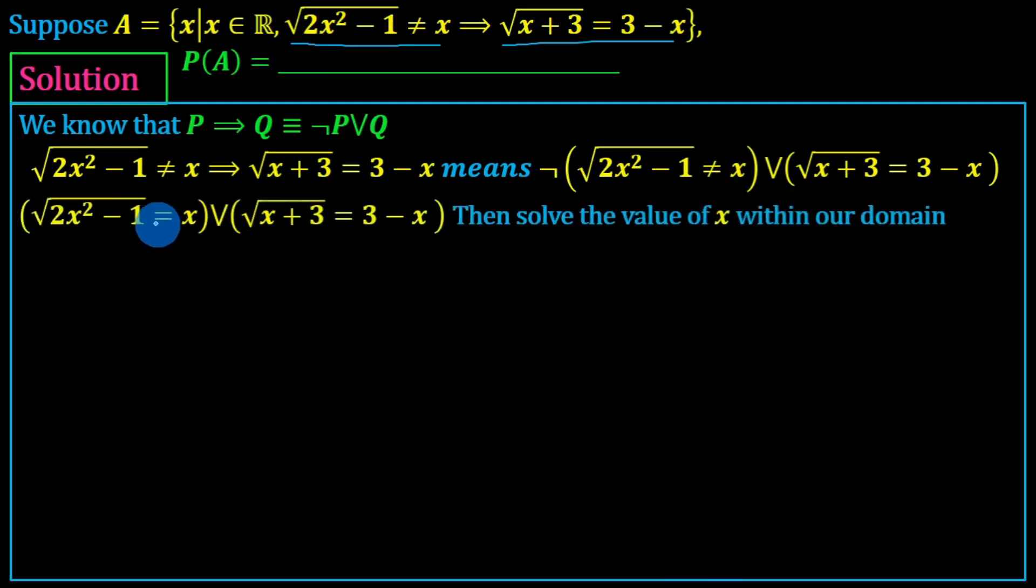The square root of x squared minus 1 is equal to x. Or the square root of x plus 3 is equal to 3 minus x. Then solve the value of x within our domain. The square root of 2x squared minus 1 is equal to x, or the square root of x plus 3 is equal to 3 minus x. If you solve for x.